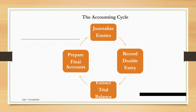In this simplified version, we journalize the entries. Note that journalize, record, extract, and prepare are all verbs — this is a practical aspect of accounts. We journalize the entries, then record the double entry from the information in the journals. After recording in the ledgers and the cash book, the third stage is to extract or set up a trial balance.